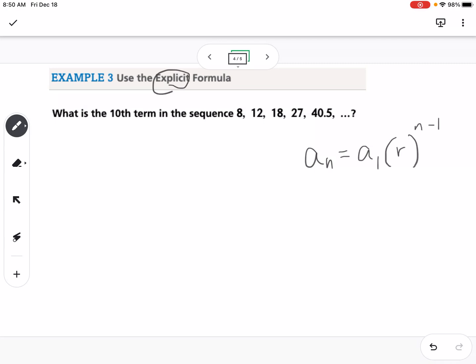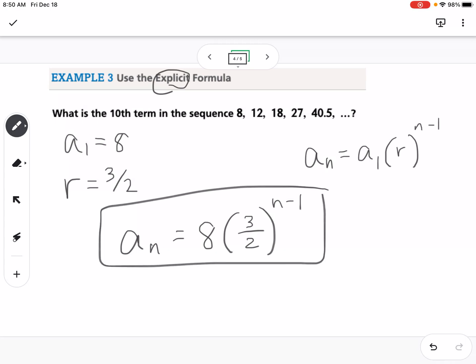We know from the previous problem, this is the same sequence. We know that a1 is 8, and we found our r to be 3 over 2 by dividing the later number by the earlier number. That tells us our recursive formula is an equals 8 times 3 over 2 raised to the n minus 1. This is my explicit formula.